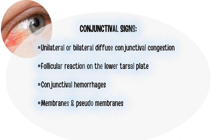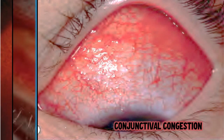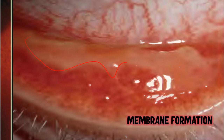Just like any other conjunctivitis, we see either unilateral or bilateral diffuse conjunctival congestion or hyperemia. The type of reaction seen in viral conjunctivitis is the follicular reaction, seen in the lower tarsal plate. Apart from that, we can see conjunctival hemorrhages and the presence of membranes and pseudomembranes. In this picture, the hyperemia is more in the fornices and decreases toward the limbus — a hallmark of conjunctival congestion. The next picture depicts membrane formation, an important finding in viral etiology.